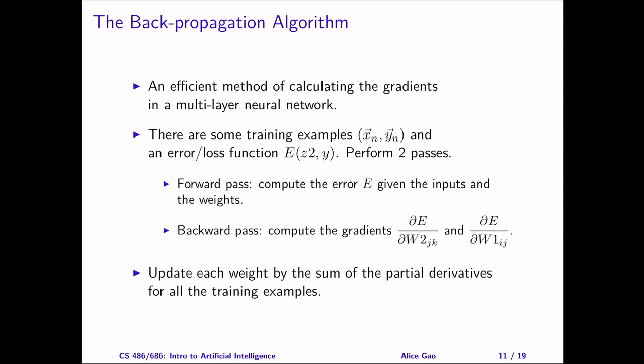Consider a setting where we have n training examples. For each training example, x consists of the input feature values and y is a label — in other words, x is the input to our neural network and y is the expected output. To evaluate how close the actual output values z2 are to the expected output values y, we will use an error or loss function e. When we execute gradient descent, our goal is to minimize the error or loss e by adjusting the weights in the neural network. Given the training examples, we will calculate the gradients by performing two passes in the network: a forward pass and a backward pass.